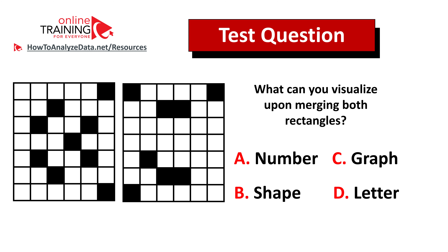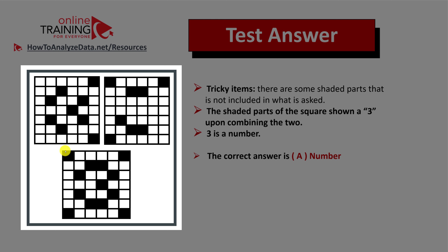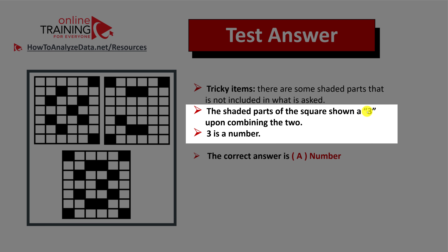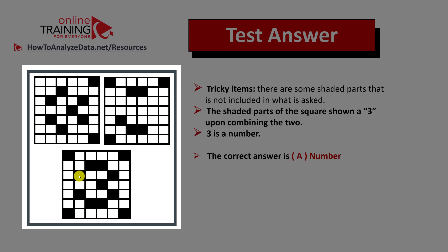Tests are not designed to be solved easily, so you should look out for tricky items. Specifically, shaded parts in the corners are not part of the end figure and are designed to confuse you. But upon combining both rectangles, you can see that a three is formed, and three is a number, so the correct choice here is choice A. You can visualize three at the bottom rectangle.